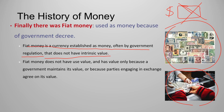Fiat money has value only because the government maintains its value, or because parties engaging in exchange agree on its value. People accept it because the government tells them they must. Examples include coins, currency, and check deposits. Things are moving fast and we now also have Bitcoin, which is an interesting new case of money that will likely be studied in more advanced courses.